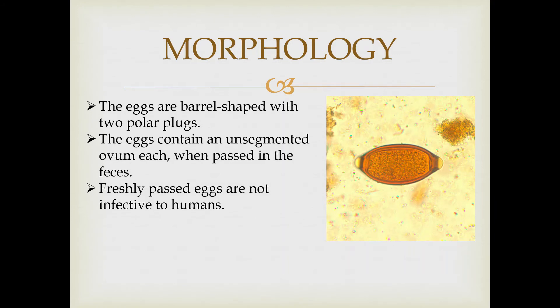The eggs of these worms are rather unique. They actually have a distinct barrel shape with two polar plugs, one at each end. When passed in fresh feces, the egg is actually unsegmented, which means that it doesn't appear to have two halves. This means that, as we recall from the life cycle in the preceding slides, they are actually not infective at that stage.